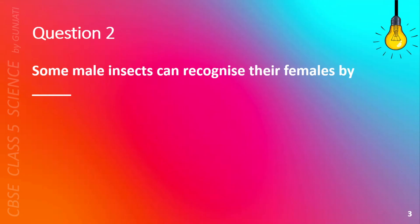Question 2. Some male insects can recognize their females by blank. A. Taste, B. Smell, C. Feel, or D. Act. The correct answer is B. Smell.